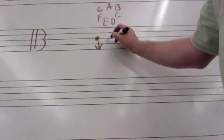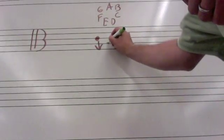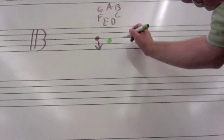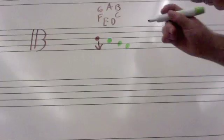So you have C is there. I'll put this in a different color for you so you can see a little better. This would be B, then you'd have A and G.